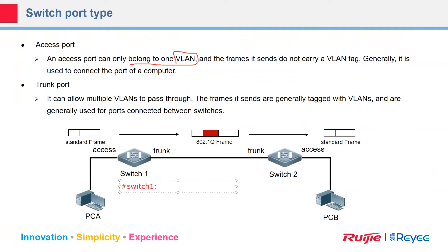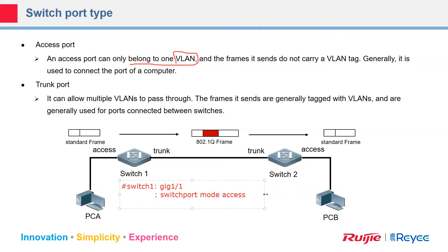For example, for switch one, on port GigabitEthernet 1/1 the command is: switchport mode access. And for port GigabitEthernet 1/2, the command is: switchport mode trunk.